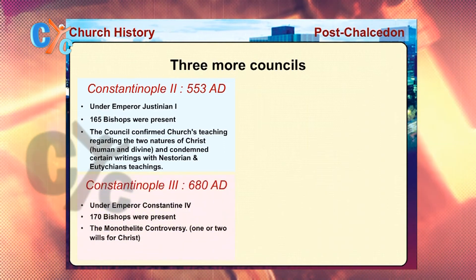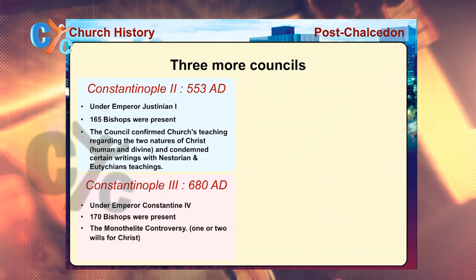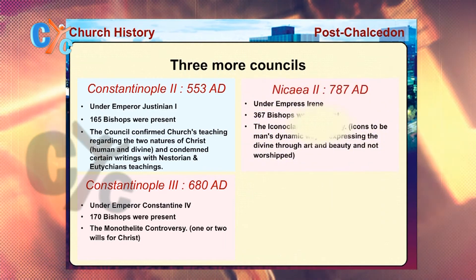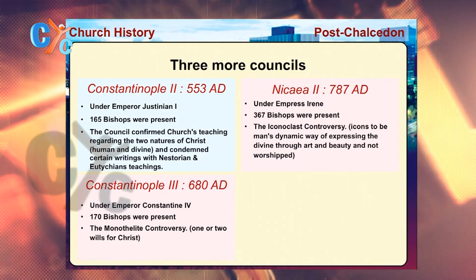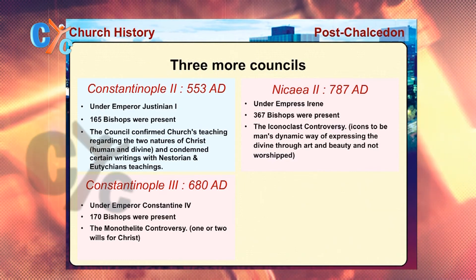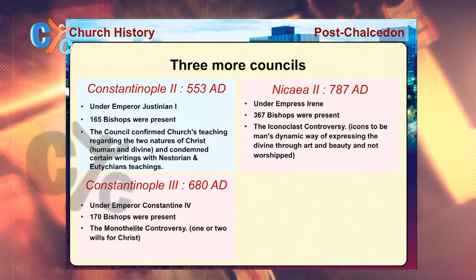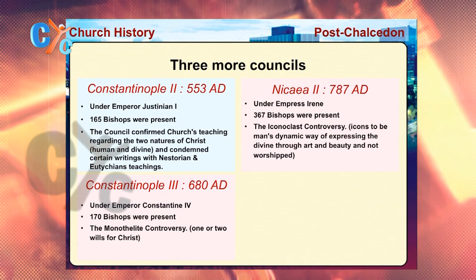The sixth ecumenical council, Constantinople the Third, was held in Constantinople in the year 680 AD, and this council discussed the monothelite controversy — in simple words, whether Jesus Christ had one or two wills. Finally, the seventh council was held in the city of Nicaea in the year 787 AD, and this council discussed the iconoclast controversy — in other words, whether we should venerate icons or whether icons are a human way of expressing the divine through art.